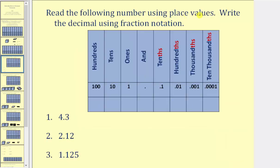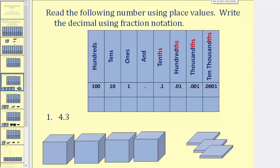Here we're asked to read the following numbers using place value, and then write the decimal using fraction notation. So we first have four point three. To help us better understand this, let's represent four point three using our base ten blocks as defined before. Because we have a four in the ones place value, we have four ones. And then because we have a three to the right of the decimal point, this represents three tenths, which would be three flats.